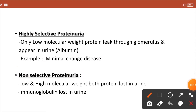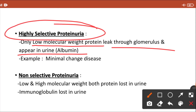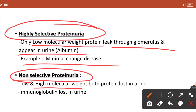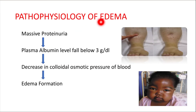Proteinuria can be of two varieties. If only low molecular weight protein — for example albumin — is lost in the urine, it is known as highly selective proteinuria, and the example is minimal change disease. But later in the disease, high molecular weight proteins like immunoglobulins are also lost, which is known as non-selective proteinuria. So albumin only is highly selective; all proteins lost is non-selective proteinuria.